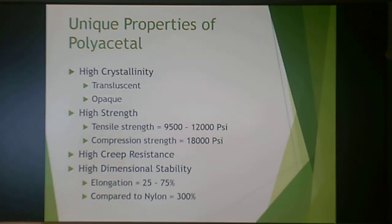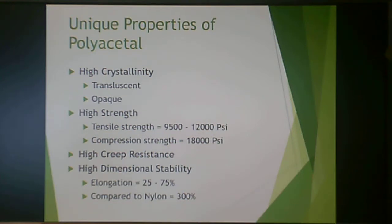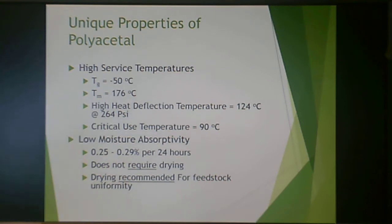Polyacetal has high crystallinity, making it somewhat translucent or opaque. It has high tensile strength, high compression strength, high creep resistance, and high dimensional stability. It doesn't elongate to the same degree as nylon — more like 25–75% — but is very strong. Its Tg is −50°C and its Tm is 176°C.